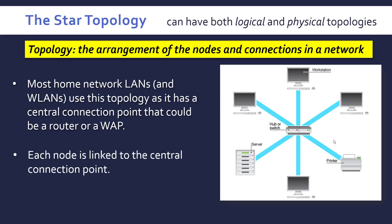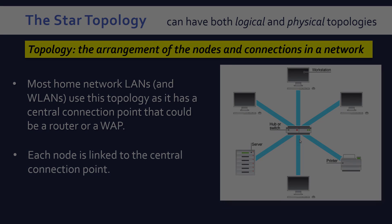In other topologies, all the devices see all the data, which isn't ideal in most cases. The main issue is you're entirely dependent on this central point — if it fails and breaks, the whole network can no longer communicate because everything has to go through it. And obviously this will cost money, so that's another disadvantage you might be able to talk about.